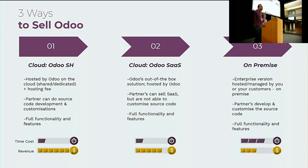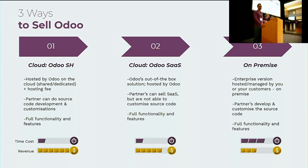The SaaS cloud option is mainly for customers fine with out-of-the-box Odoo installation — they don't need custom development. It's cost-effective and implementation time is much lower compared to on-premise. The downside is the partner cannot do custom development on SaaS. With Odoo SH, the customer can still be hosted on the cloud while allowing custom development. On-premise is available for customers who require it; the partner can do custom development, but it takes longer and is less cost-effective as the customer must also pay for a server and maintenance.